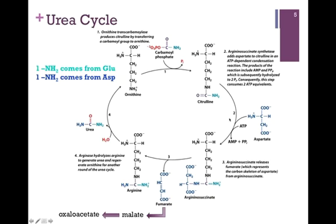Our next amine donor comes from aspartate. The argininosuccinate synthetase enzyme adds the entire aspartate amino acid to the carbonyl carbon of citrulline to form argininosuccinate, a rather complex molecule. Since it is a synthetase enzyme, it uses the energy from ATP — specifically, we hydrolyze two phosphoanhydride bonds, costing us two ATP equivalents to add that aspartate.